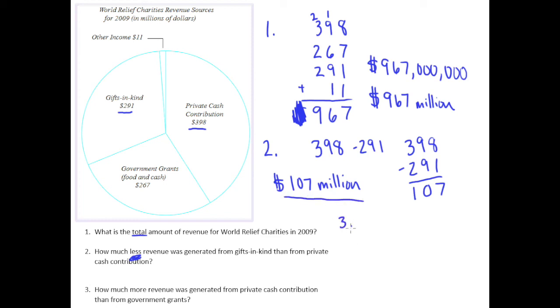Finally, number three says, how much more revenue was generated from private cash contribution than from government grants? This is tricky. Because just thinking of the word more, that tends to make me think of addition, adding things. But in this case, how much more revenue was generated? Another way I can maybe restate that is, what's the difference of the revenue generated from private cash contribution and that generated from government grants? So this actually is another subtraction problem to figure out what the difference is or how much more private cash contribution there is than government grants.